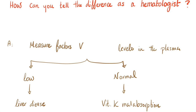You order factor V in the plasma. If it's low, it's liver disease. If it's normal, it's vitamin K malabsorption. Remember, vitamin K affects factors 2, 7, 9, and 10. So you pick any factor other than 2, 7, 9, and 10. If it's low, it's liver disease, because all factors come from the liver with the exception of factor VIII. If it's normal, this is vitamin K malabsorption.